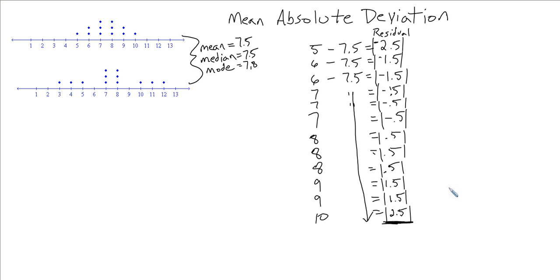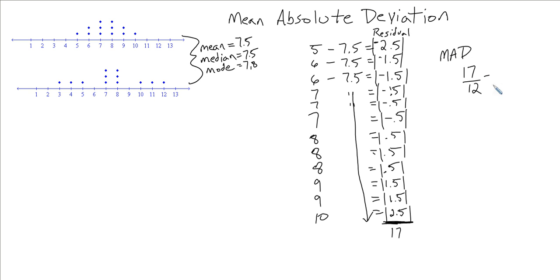Now we find the mean of all these absolute values. The way we find the arithmetic mean is to add all the values and then divide by the number of values. Here we have 12 numbers. Adding the absolute residuals: 2.5 plus 2.5 is 5, plus 3 is 8, plus 4.5 is 12.5... totaling 17. We divide 17 by the number of residuals, which is 12 — also the same as the number of values in our data set. So our mean absolute deviation, or MAD, equals 17/12, or 1 and 5/12.